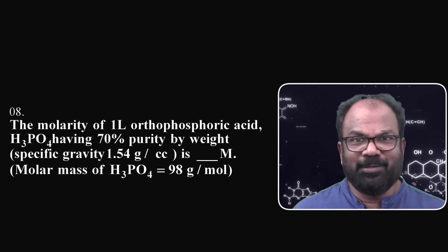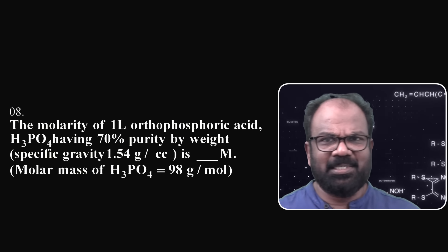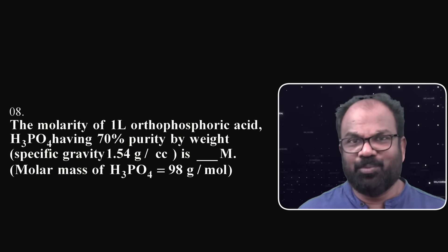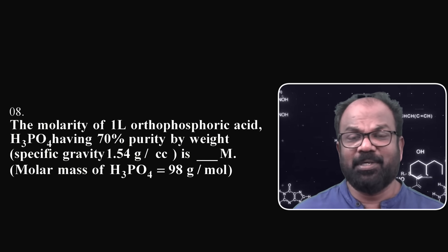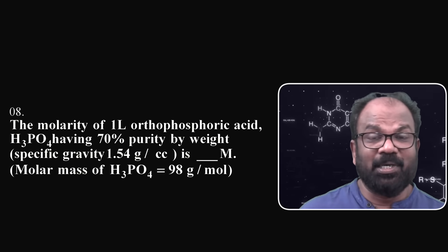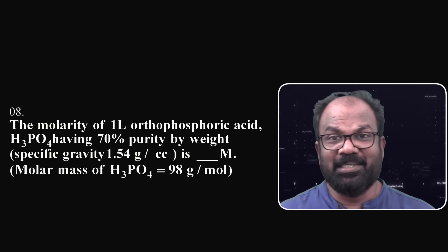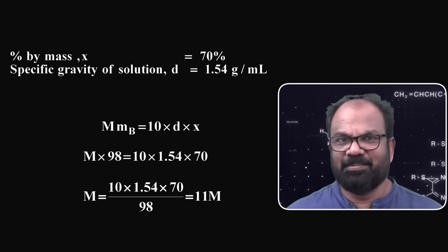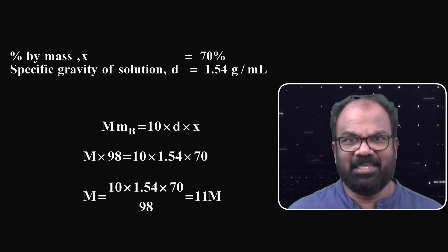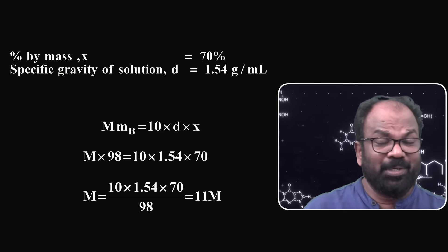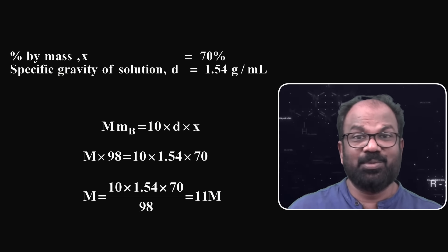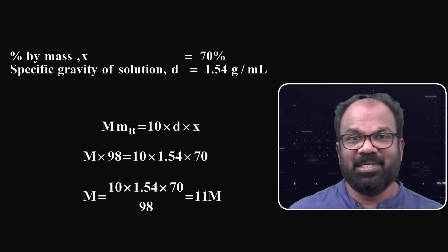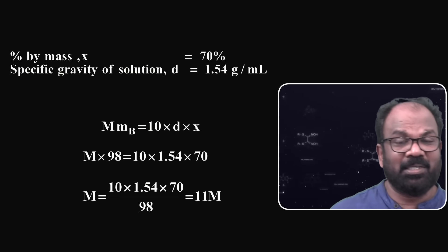Next, question number 8. The molarity of 1 litre of orthophosphoric acid H₃PO₄ having 70% purity by weight (specific gravity = 1.54 g/cc) is ___ molar. Given: molecular mass of H₃PO₄ is 98 g/mol. Here, percentage by mass x = 70% and density d = 1.54 g/ml. Using the equation: molarity × molecular mass of solute = 10 × d × x, substituting the values, the molarity is found to be 11 molar. So the answer is 11.